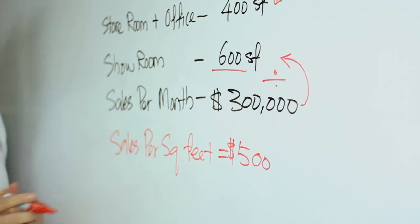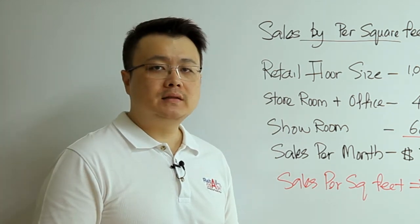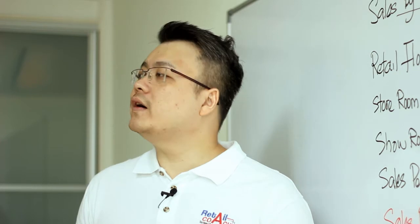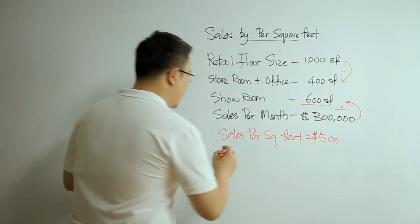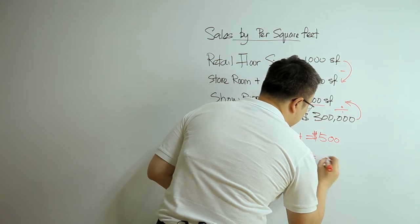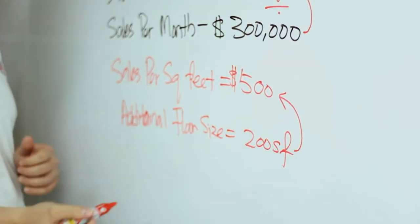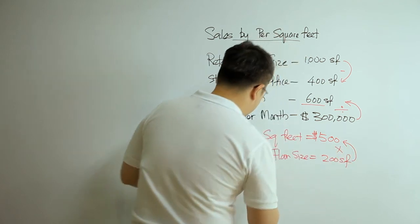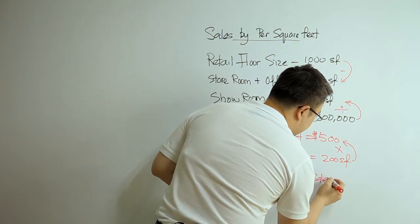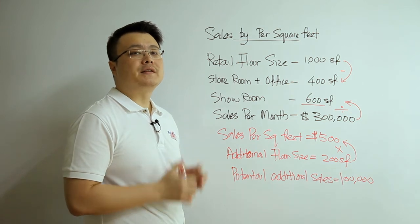After you get the Sales per Square Foot, what does it mean to you? For example, if you plan to expand your showroom by an additional 200 square feet — maybe you're going to take over your neighbor's retail floor — the formula is: 200 multiplied by $500, meaning your potential additional sales is $100,000. This is the full calculation for Sales per Square Foot.